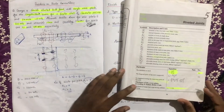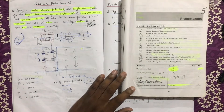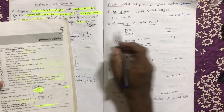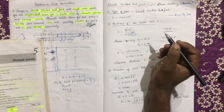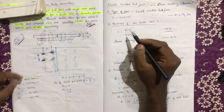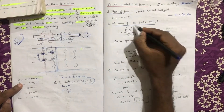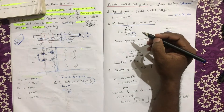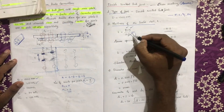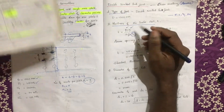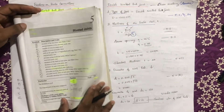For boiler and rivet joints, from equation 5.1: t is equal to pD divided by 2 times sigma-t times eta, where eta is the efficiency of the joint. We know the inside pressure, the diameter of the boiler shell, and sigma-t is the tensile stress. We obtain t and eta from the efficiency table.